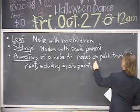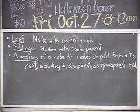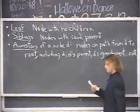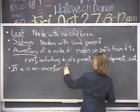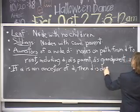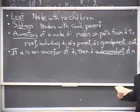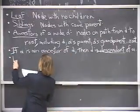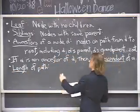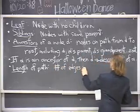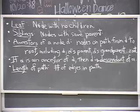That includes d's parent, d's grandparent, d's great-grandparent, and so on, always including the root. If some node a is an ancestor of d, then d is said to be a descendant of a. The length of a path is the number of edges in the path — not the number of vertices, which is one less than the number of edges.